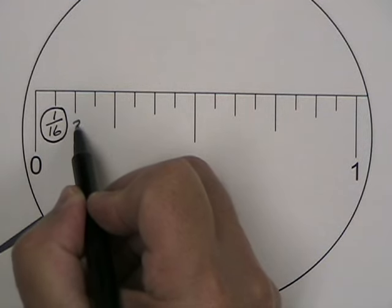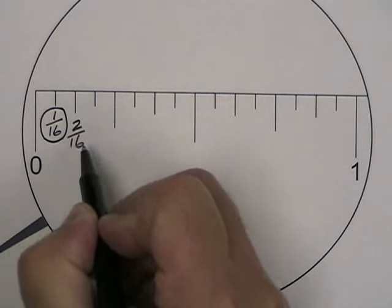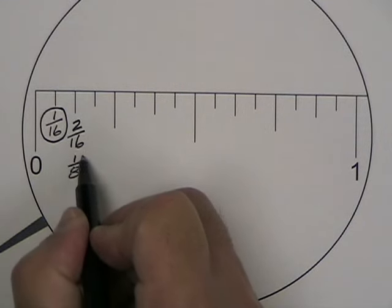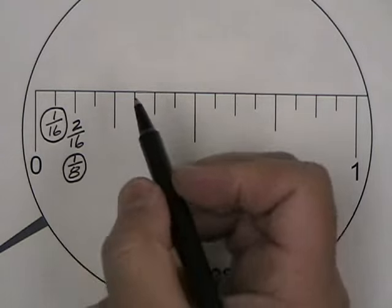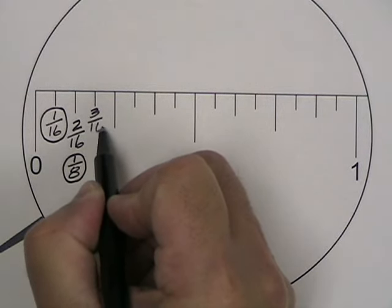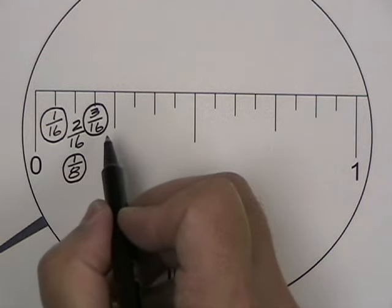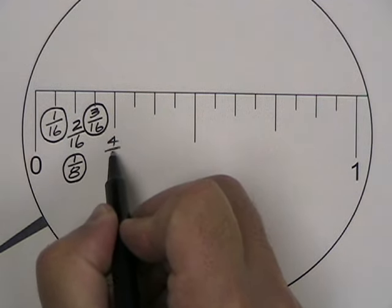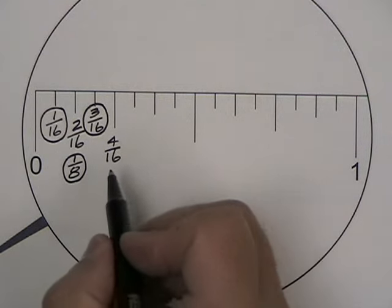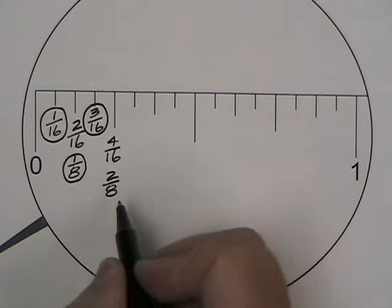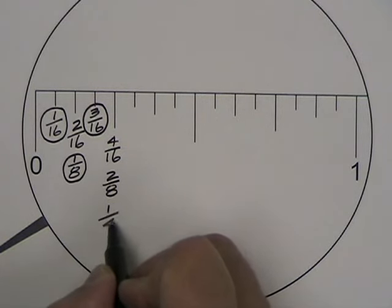The next measurement is two sixteenths and we know it formally as one eighth. Three sixteenths is the next measurement. It cannot be broken down any further and that remains as three sixteenths. Four sixteenths is also known as two eighths or more formally one quarter of an inch.